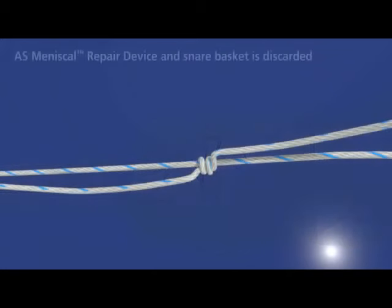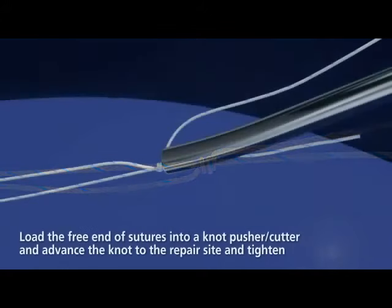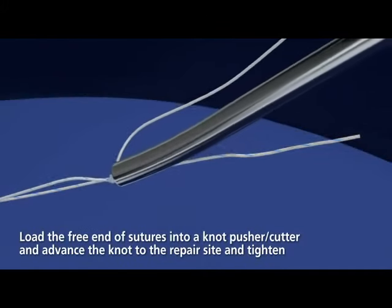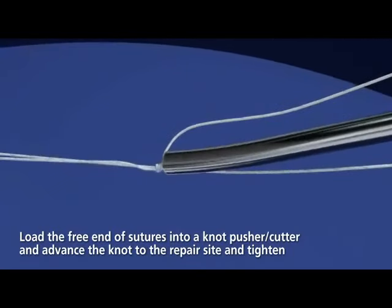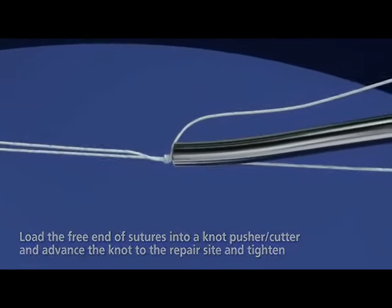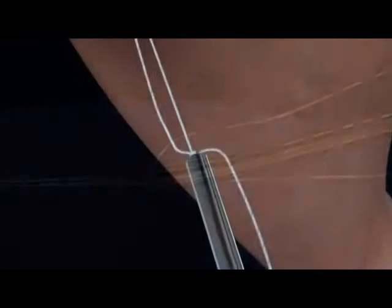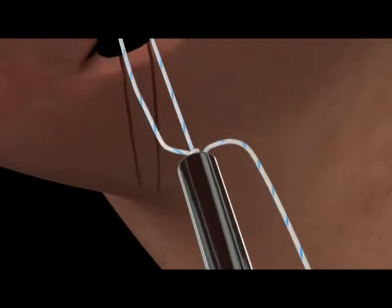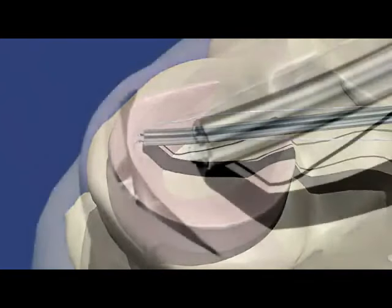Discard the AS meniscal repair device and snare basket. Load the free end of the suture into a standard knot pusher. Apply traction to the suture post to remove any slack in the suture. With the knot pusher, advance to the repair site.